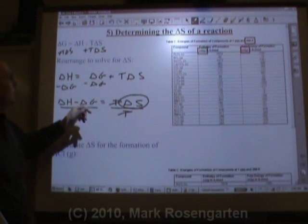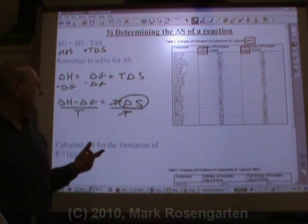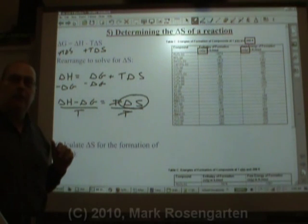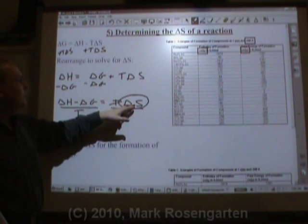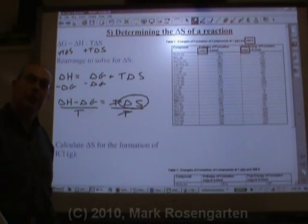Both delta H and delta G are measured in kilojoules. Temperature is measured in Kelvin. And the units for delta S are kilojoules per Kelvin. And that's exactly what this is going to give us.